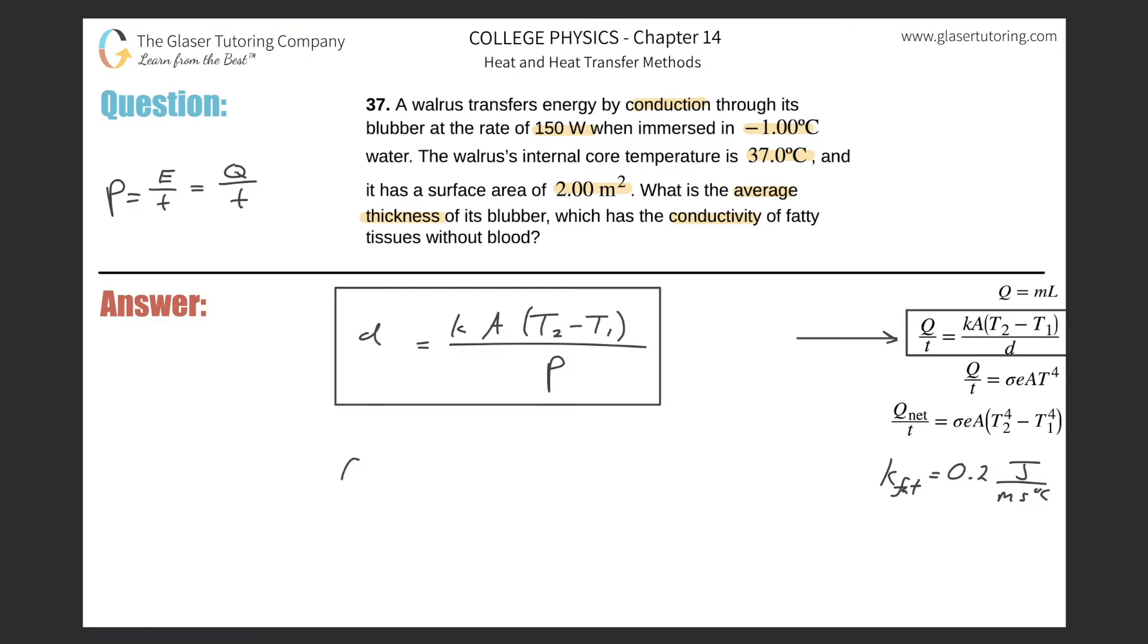Now all we have to do is just plug in. Make sure you got the right units. K, as I mentioned, is looked up in the table. The area they mentioned was two square meters. The temperature differential, just take 37. Doesn't matter which one you choose. The difference is the same. The magnitude will be the same. It'll be the sign that changes.